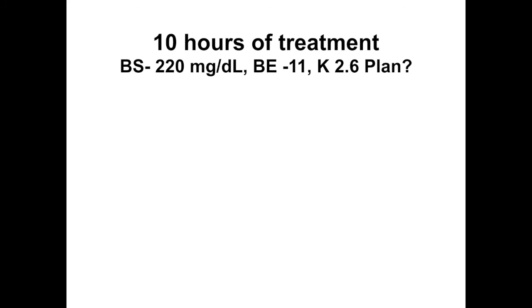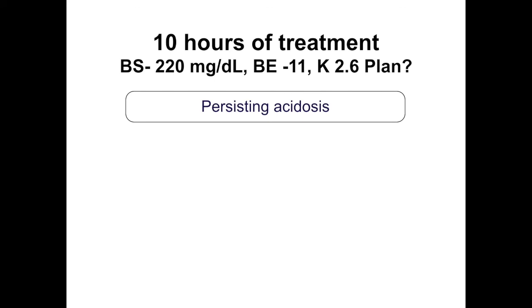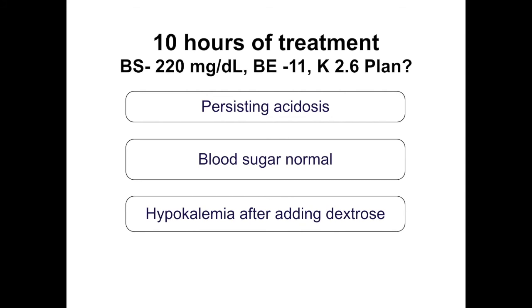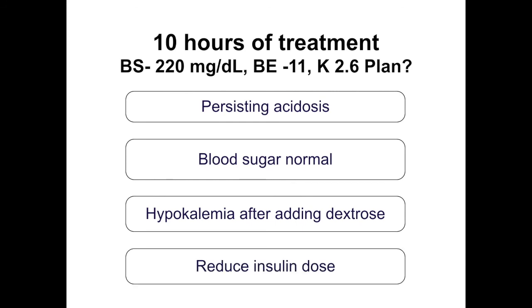At 10 hours, blood sugar is normal but metabolic acidosis persists and potassium has dropped to 2.6. The risk of continuing insulin and worsening hypokalemia is far greater than allowing more time for acidosis resolution — a base excess of -11 will not kill the child, but a potassium of 2 will. The best approach is to decrease or temporarily stop insulin, rebuild potassium levels, and then restart insulin.